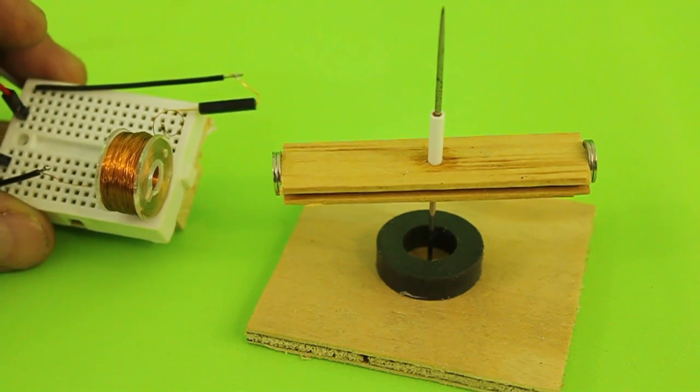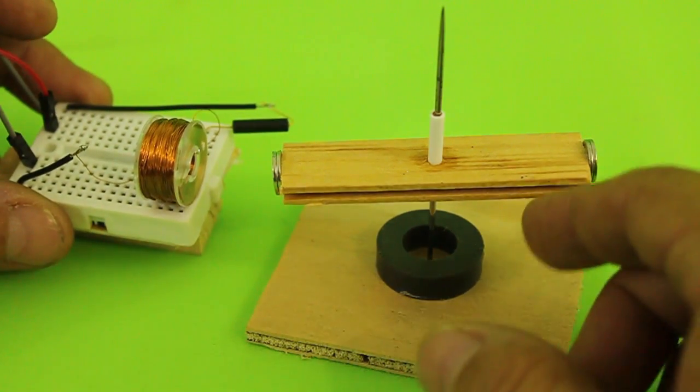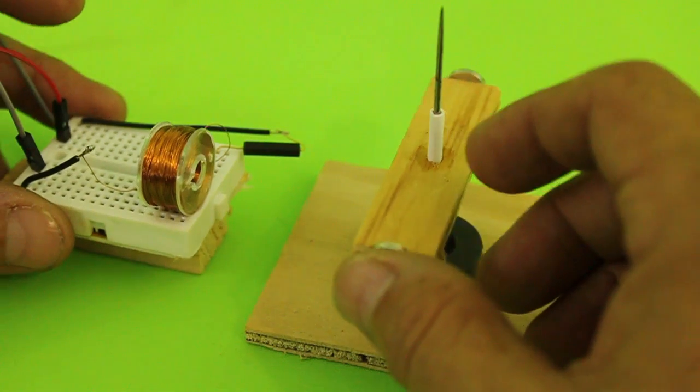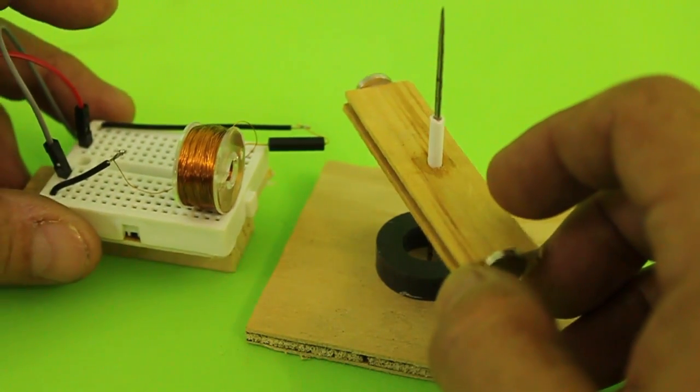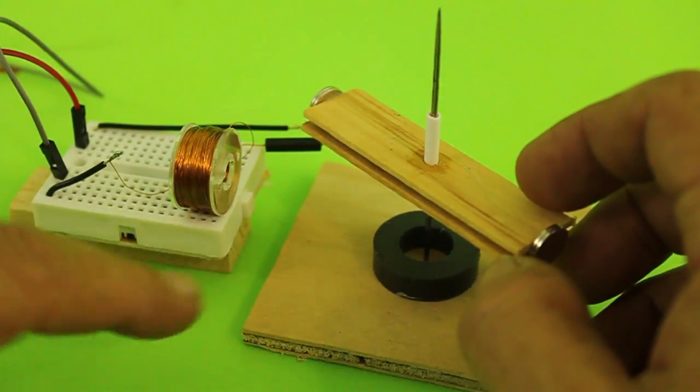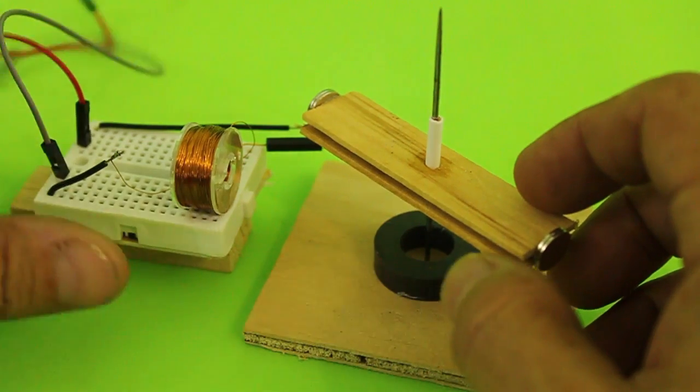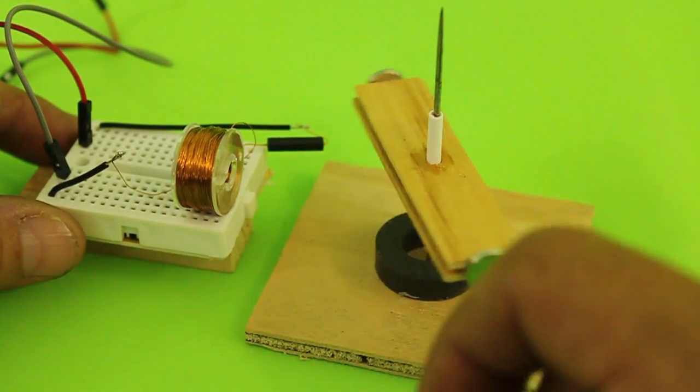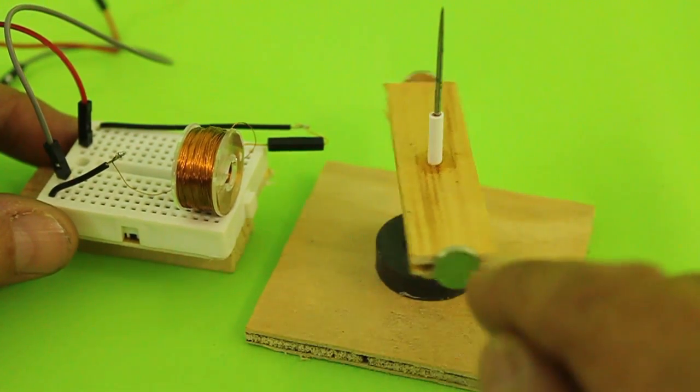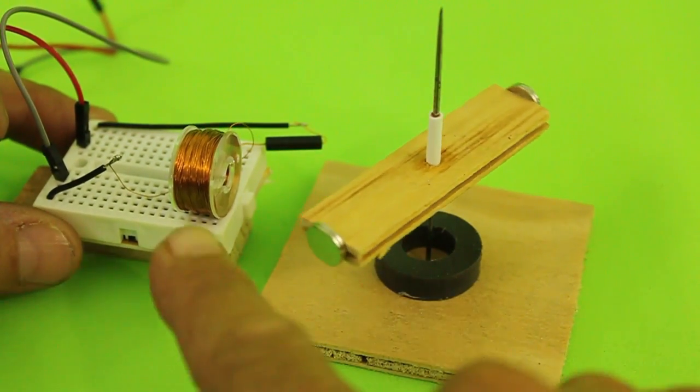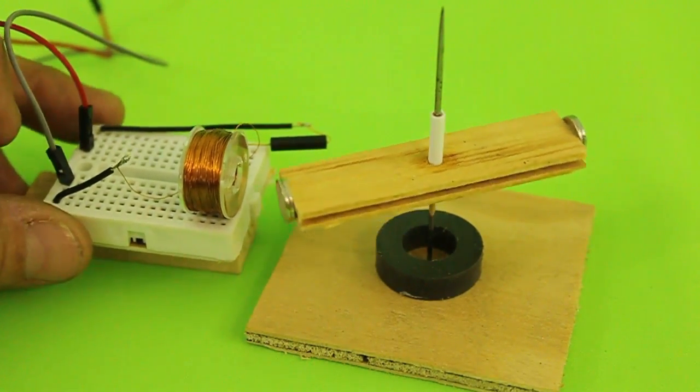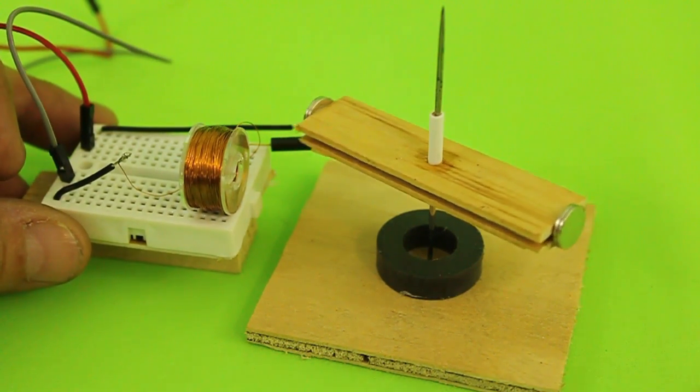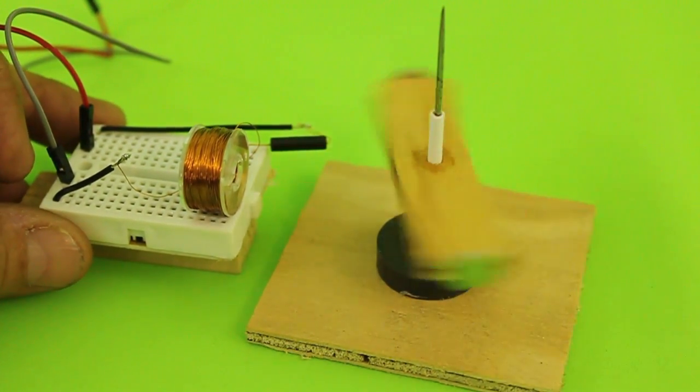We have a magnetic switch that closes when a magnet is near. So when the rotor rotates and the magnet passes near the magnetic switch, the coil is energized and attracts the magnet. So every half turn, the rotor receives a kick from the electromagnet and this keeps the motor rotating.